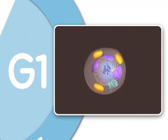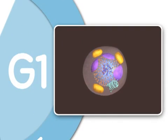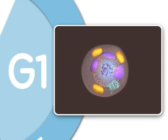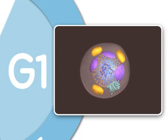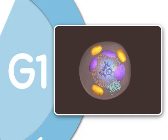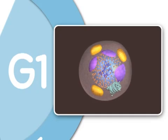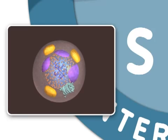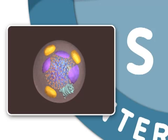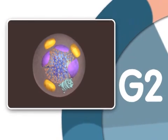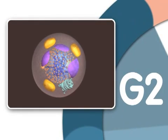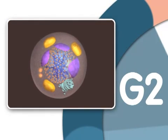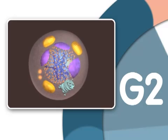G1, or Gap1, is the first growth stage of interphase. In G1, the cell grows to nearly its full size and performs many of its specific biochemical functions that aid the organism. Next is the S, or synthesis phase, an important stage because it is during the S phase that DNA in the nucleus is replicated. The cell next enters another growth stage called G2, or Gap2, where the cell finishes growing.